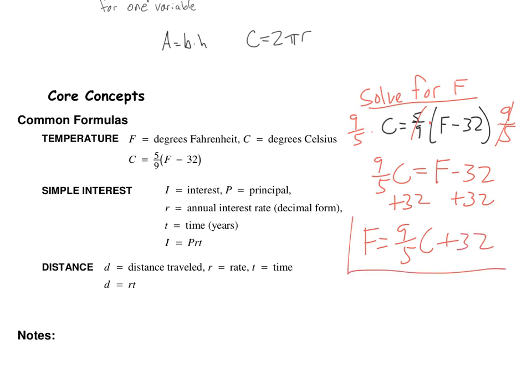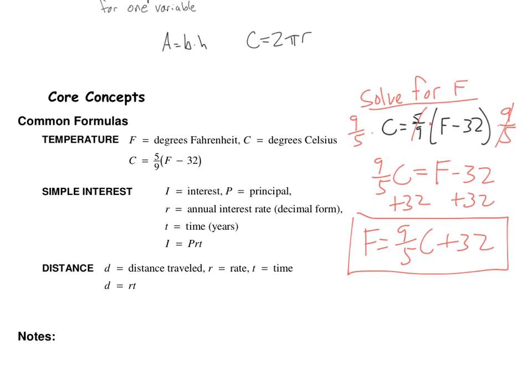And we end up with F = 9/5 C + 32. We now have a new formula, all solved for F. When we're doing this, notice that the C, we don't know what C is. It's a variable. So 9/5 times C is just 9/5 C. We can't do anything with that. And then we're going to add 32. Well, we don't know what C is, so we can't really add it. We just write it as an expression.